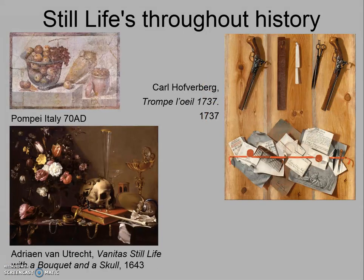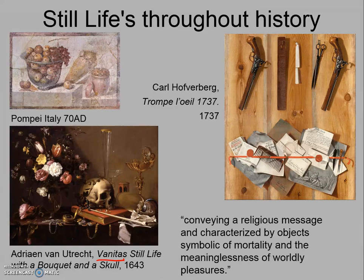Still lives are something that were used throughout history for artists to advance their skills, as well as to communicate ideas and make their places of work or homes more aesthetically pleasing. Here you can see three different still lives from three very different periods in history. In the lower left-hand corner we are introduced to a new term — vanitas — where artists use still lives to convey a religious message, using imagery symbolic of mortality as well as the meaninglessness of worldly possessions and pleasures.